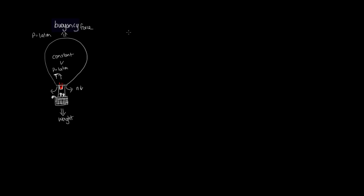Back to our hot air balloon. With the ideal gas law, PV = nRT. As we've said, the pressure is constant inside and out, the volume of the hot air balloon remains constant, and R is a constant. So PV = nRT equals a constant, which means the number of moles times the temperature is constant. We can write this as n₁T₁ = n₂T₂.